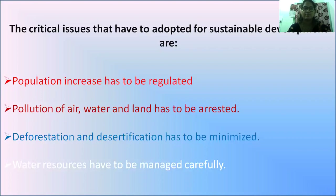Increasing groundwater recharge is also important. As population increases, pollutants also increase. In industrial areas, pollutants are directly released into groundwater underground, so groundwater becomes polluted. Therefore, reducing pollutants will provide good quality water to the population.